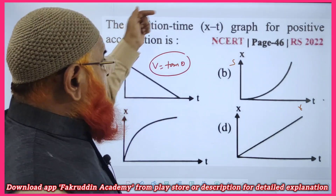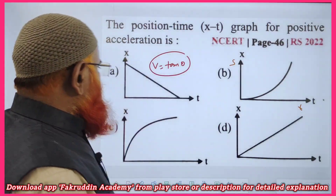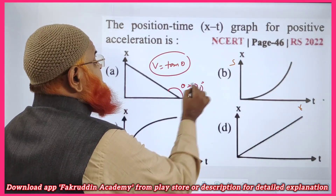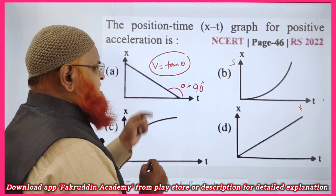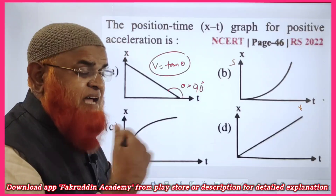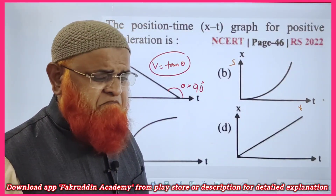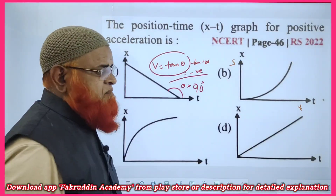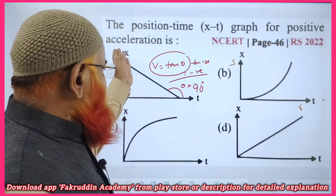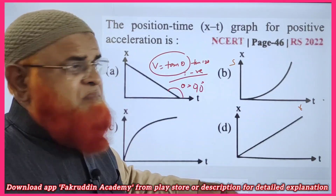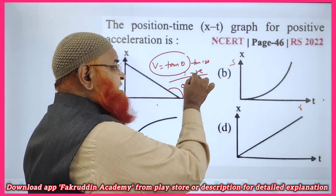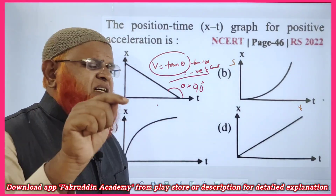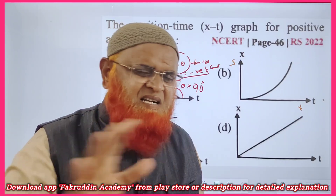The position-time graph showing positive acceleration — let me go for the first graph. If you observe this line, it is greater than 90 degrees. When theta is greater than 90, tan 120 is going to be negative. That means velocity is negative. And since it is a straight line, the angle is constant, meaning velocity is also constant — negative and constant. There is no change in velocity, so the first graph has no acceleration.